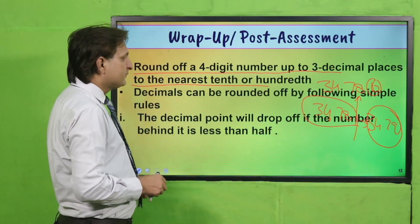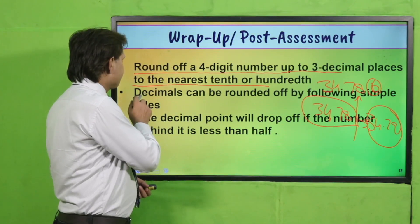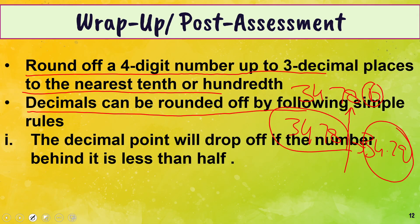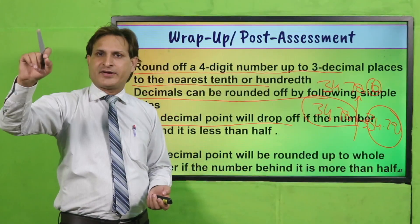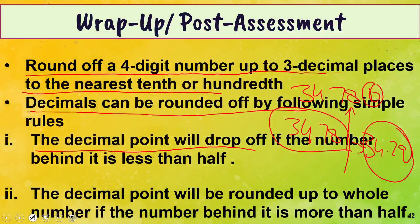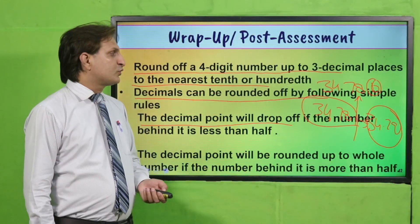Decimal can be rounded off by following simple rules. The decimal point will be dropped off if the number behind it is less than half — half का मतलब 0.5, जो के 5 का figure याद में रखना है। And the decimal point will be rounded up to the whole number if the number behind it is more than half.